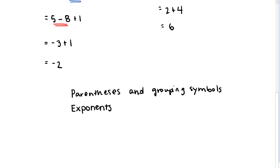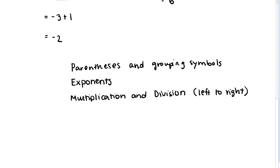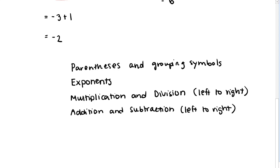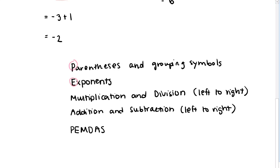Then after exponents, we perform multiplication and division — these are on the same level and done from left to right. And lastly, addition and subtraction come afterwards, also evaluated from left to right. You'll see the acronym PEMDAS as a way of memorizing this order: P for parentheses and grouping symbols, E for exponents, M and D for multiplication and division, and A and S for addition and subtraction.